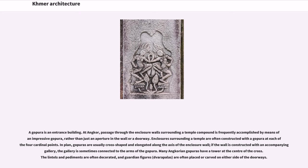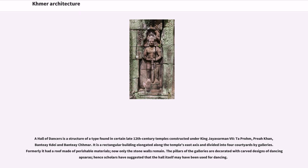A gopura is an entrance building. At Angkor, passage through enclosure walls is frequently accomplished by means of an impressive gopura rather than just an aperture or doorway. Enclosures are often constructed with a gopura at each of the four cardinal points. In plan, gopuras are usually cross-shaped and elongated along the axis of the enclosure wall; if the wall has an accompanying gallery, the gallery is sometimes connected to the arms of the gopura. Many Angkorian gopuras have a tower at the center of the cross. The lintels and pediments are often decorated, and guardian figures, Dvarapalas, are often placed or carved on either side of the doorways.